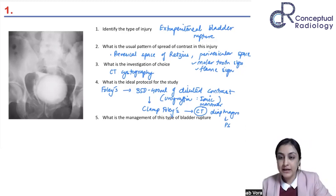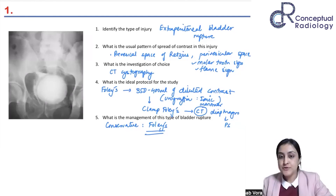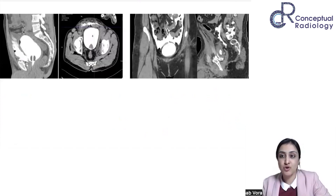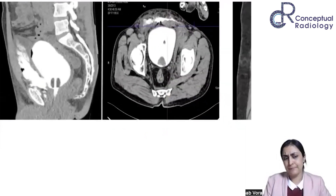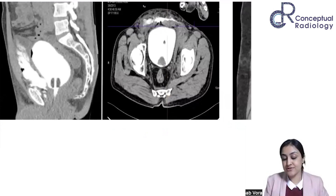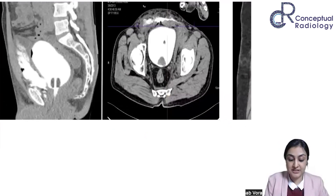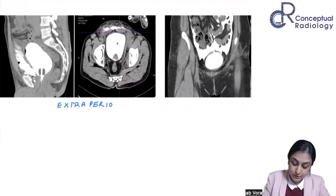Is this clear? Fifth question: what is the management for this type of bladder rupture? For extraperitoneal bladder rupture it's conservative management — you keep the patient on a Foley catheter long-term and it will eventually seal. Now let's discuss bladder trauma fully. Look at the first two CT cystography images — is it intraperitoneal or extraperitoneal? You can see contrast extravasating along the extraperitoneal space — this is extraperitoneal bladder rupture in the prevesical space of Retzius.